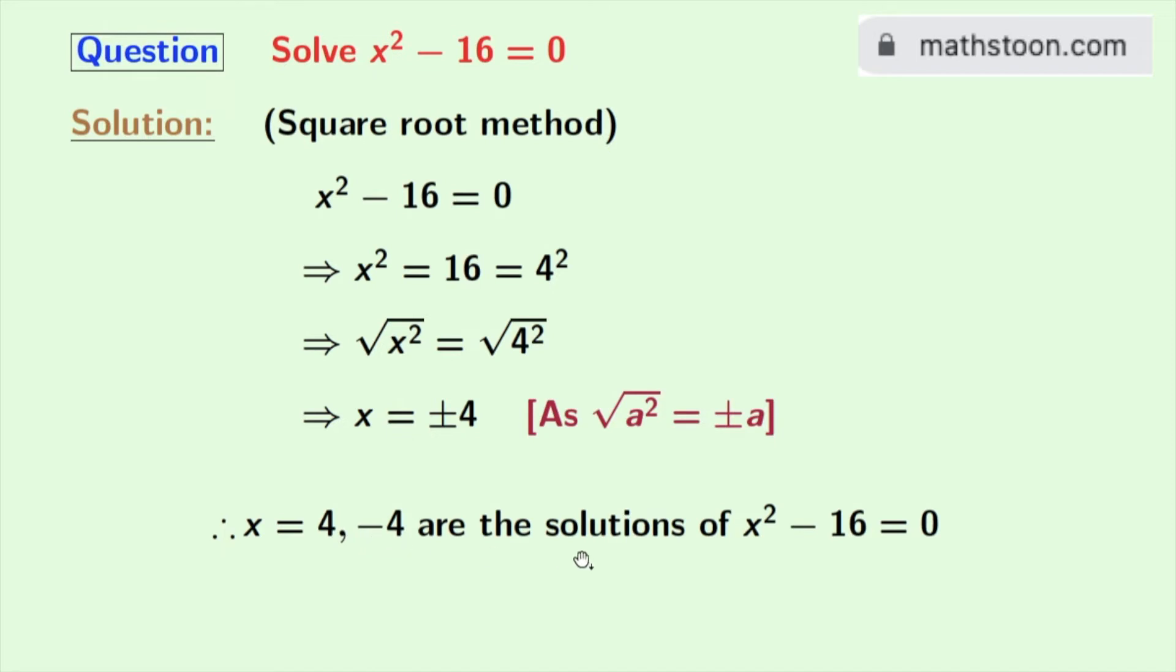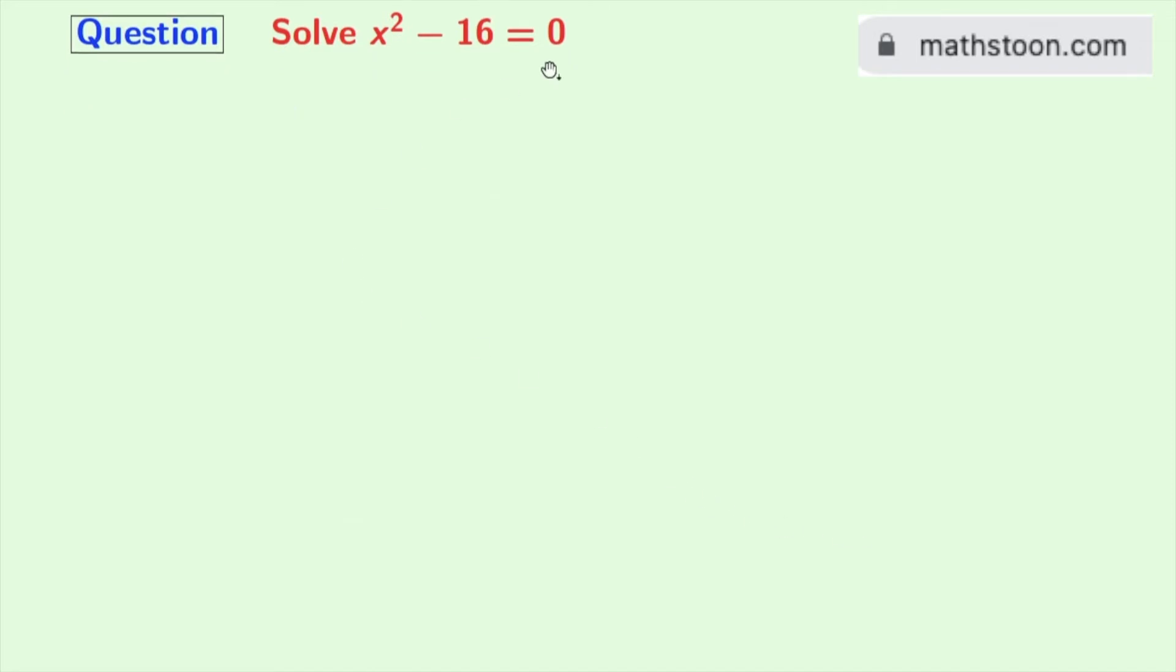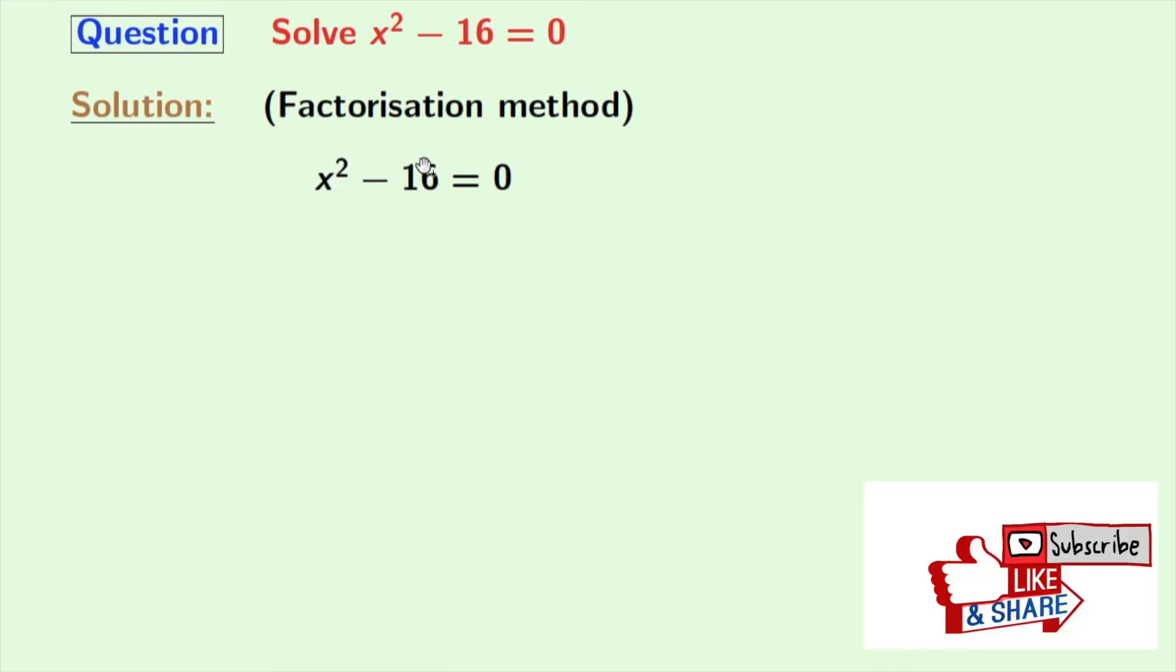So 4 and -4 are the solutions of the given equation. Now we will solve the same equation using the factorization method. This is our given equation, and rewriting 16 as 4² we get x² - 4² = 0.